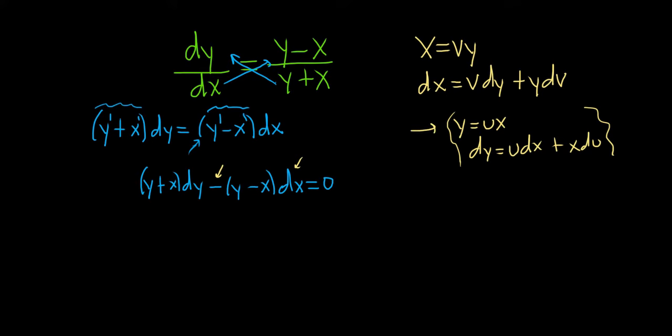So we'll carefully make these substitutions now. We have ux - so replace the y with ux plus x. And then dy is udx plus xdu. And then minus, kind of messy - y is ux and then minus x, and then dx. And all of that is equal to 0.